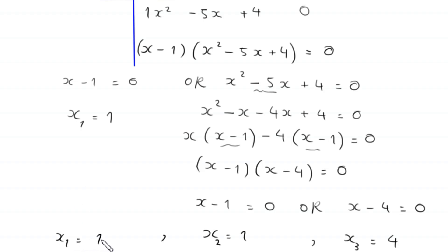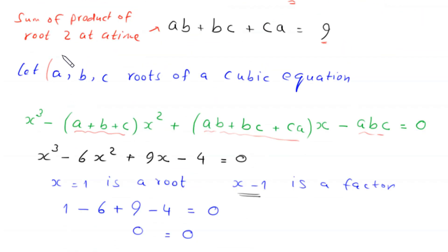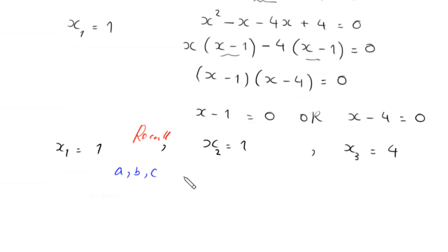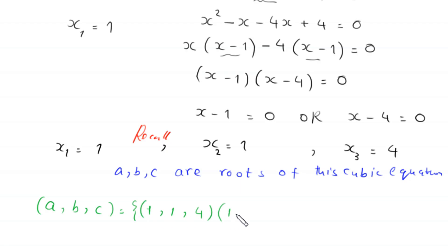Recalling that a, b, and c are the roots of the cubic equation, the solutions are (a, b, c) = (1, 1, 4). Due to symmetry, all permutations are valid: (1, 1, 4), (1, 4, 1), and (4, 1, 1).